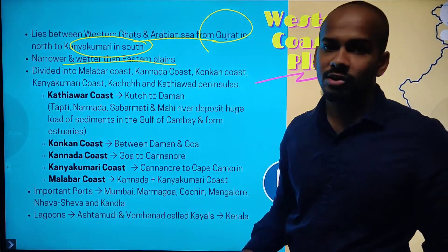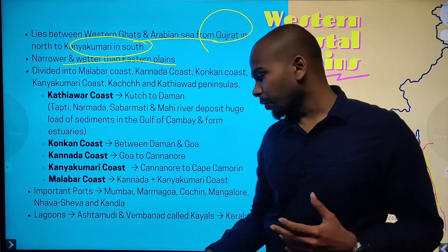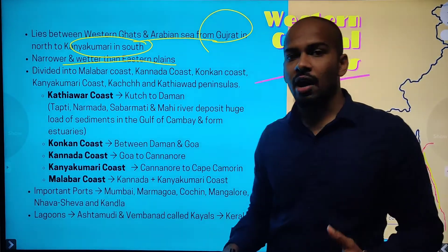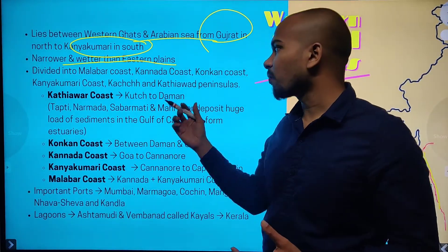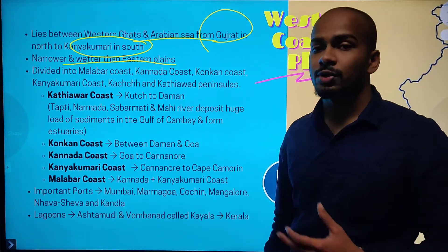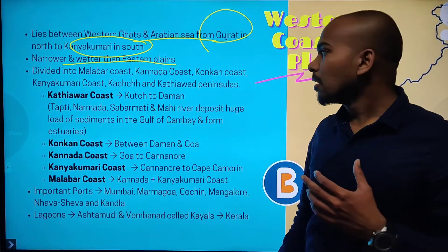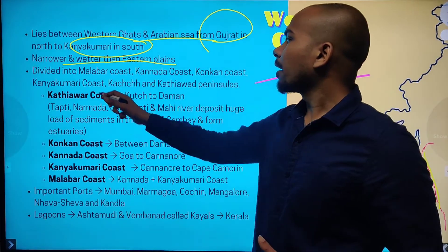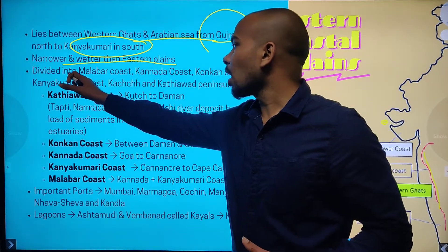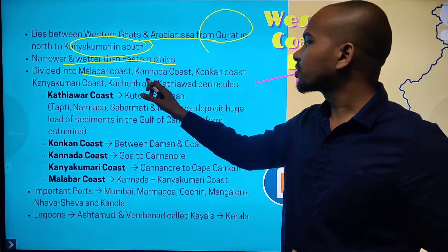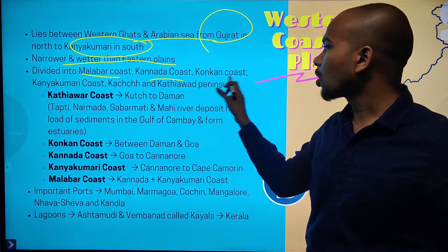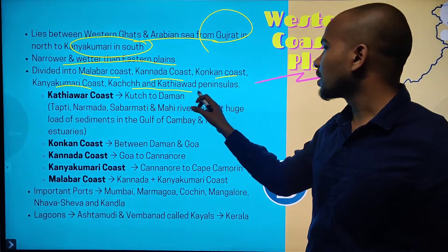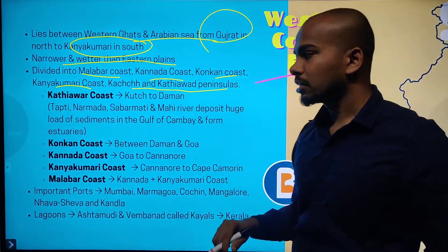It is wetter because the monsoon is going to enter here and there is going to be high rainfall. There is also the presence of a multiple number of rivers. It is divided into Malabar coast, Kannada coast, Konkan coast, Kanyakumari coast, and Kutch and Kathiawar peninsulas.